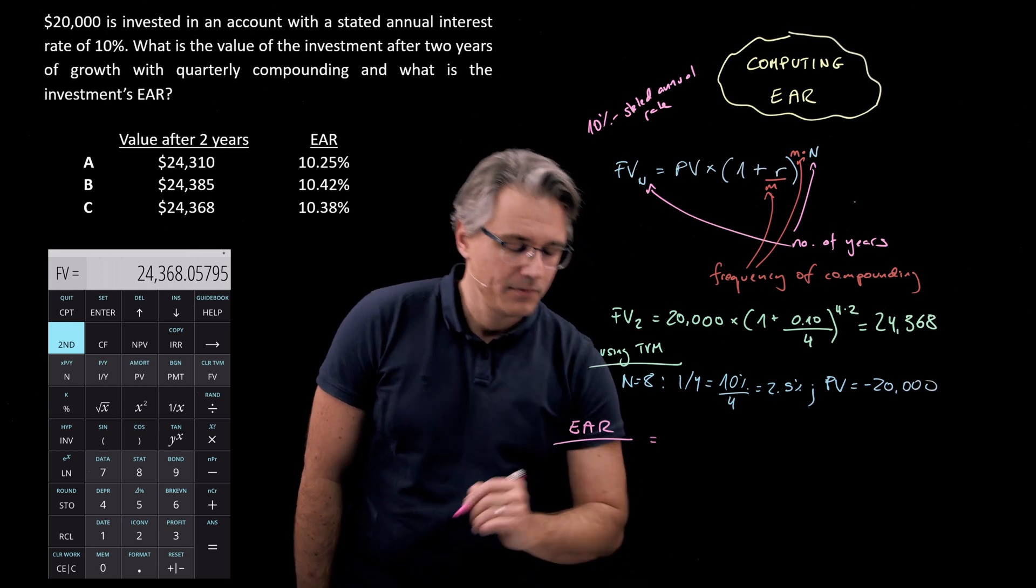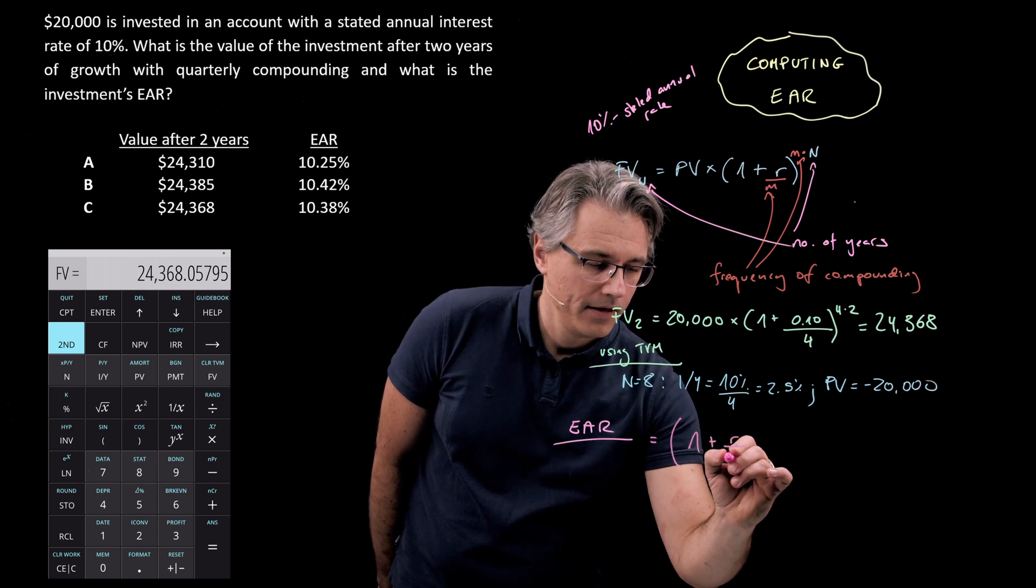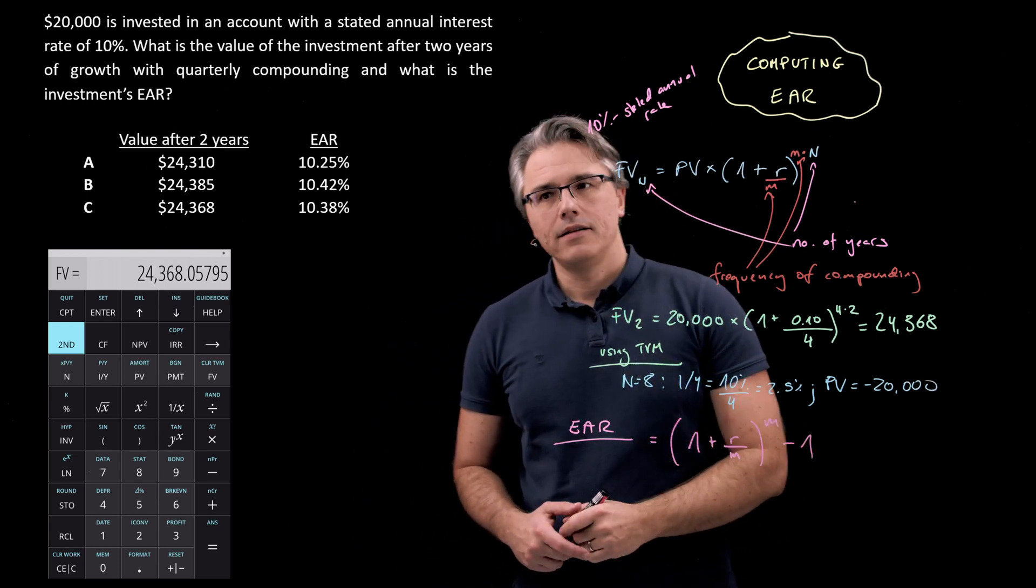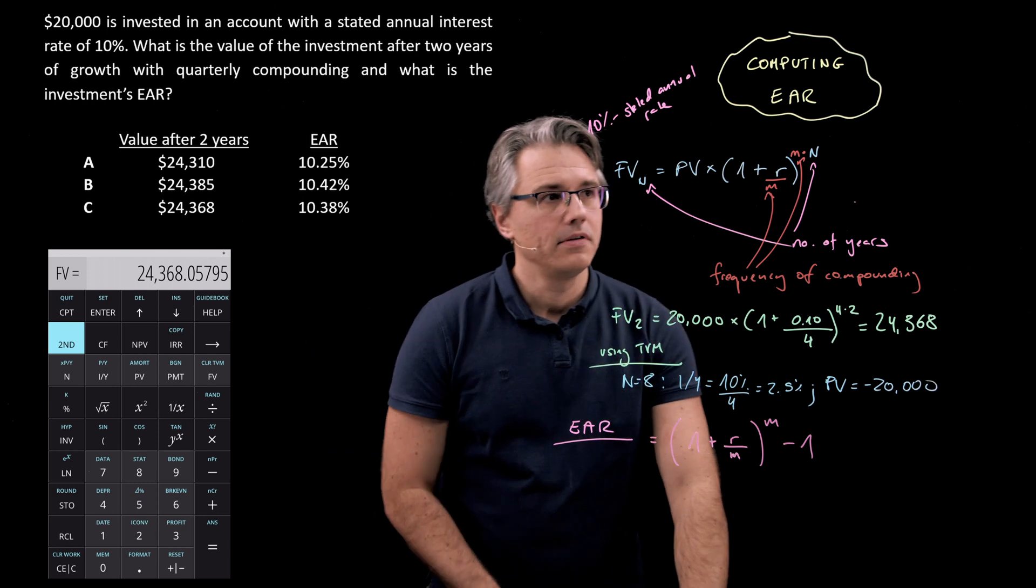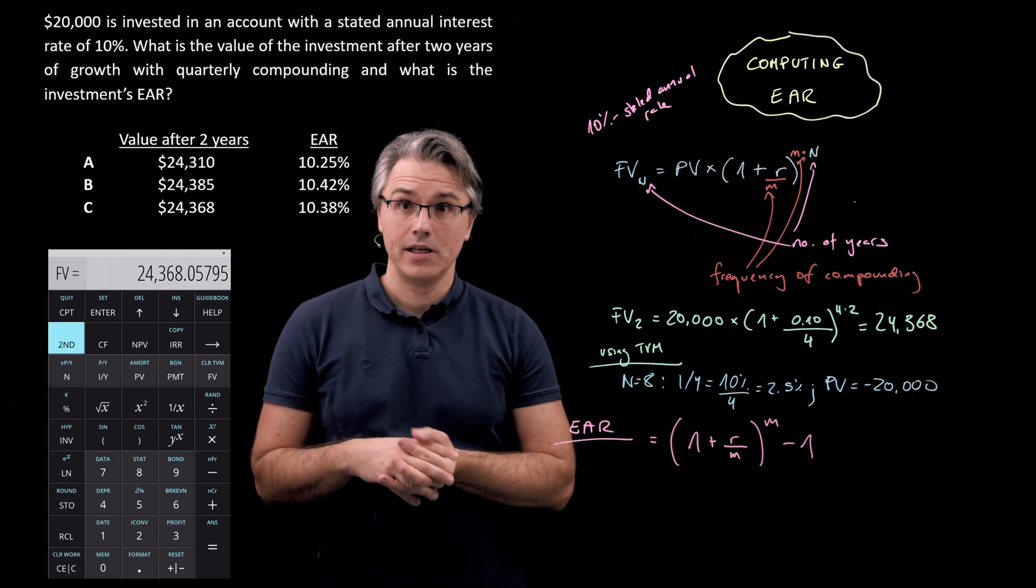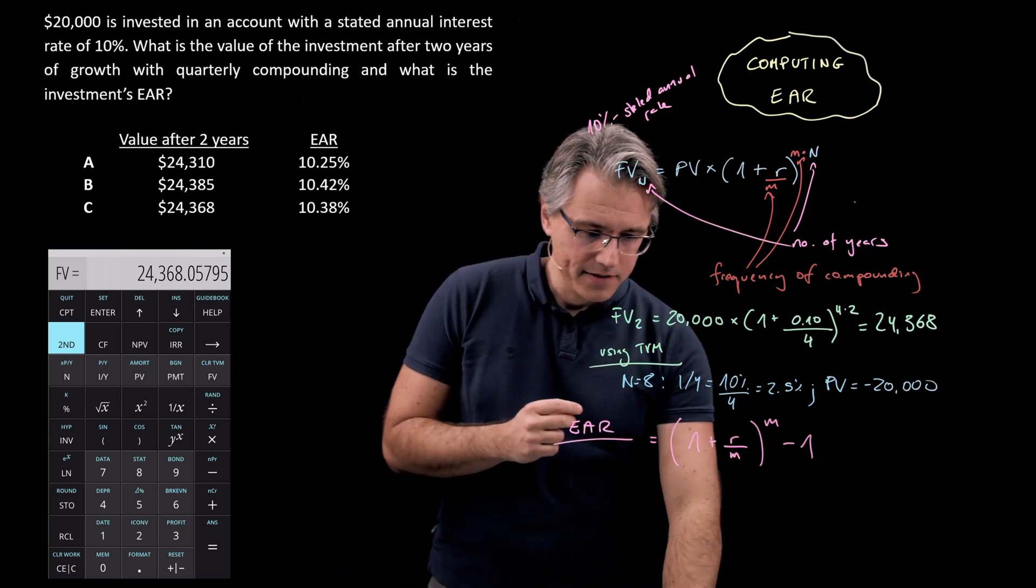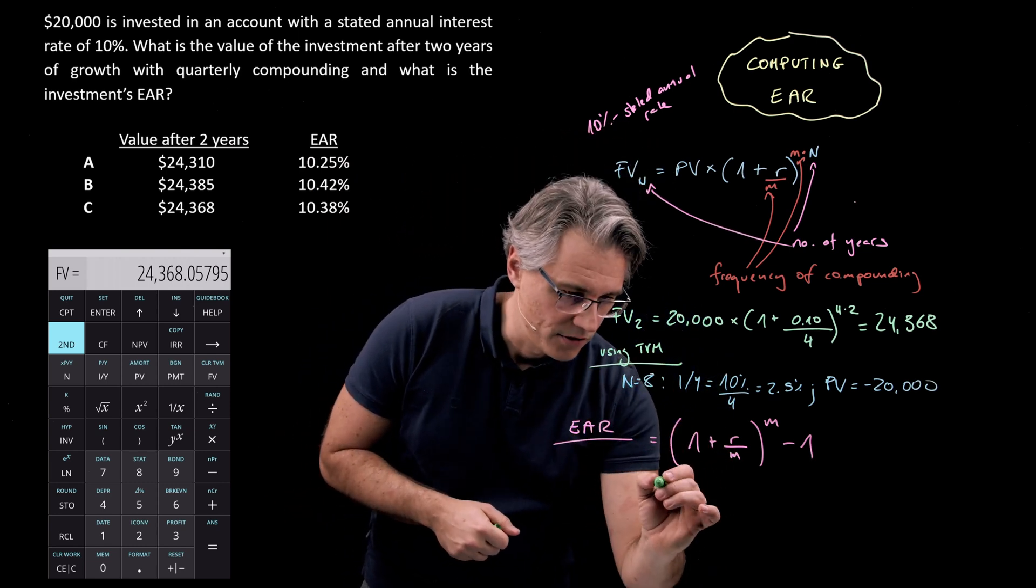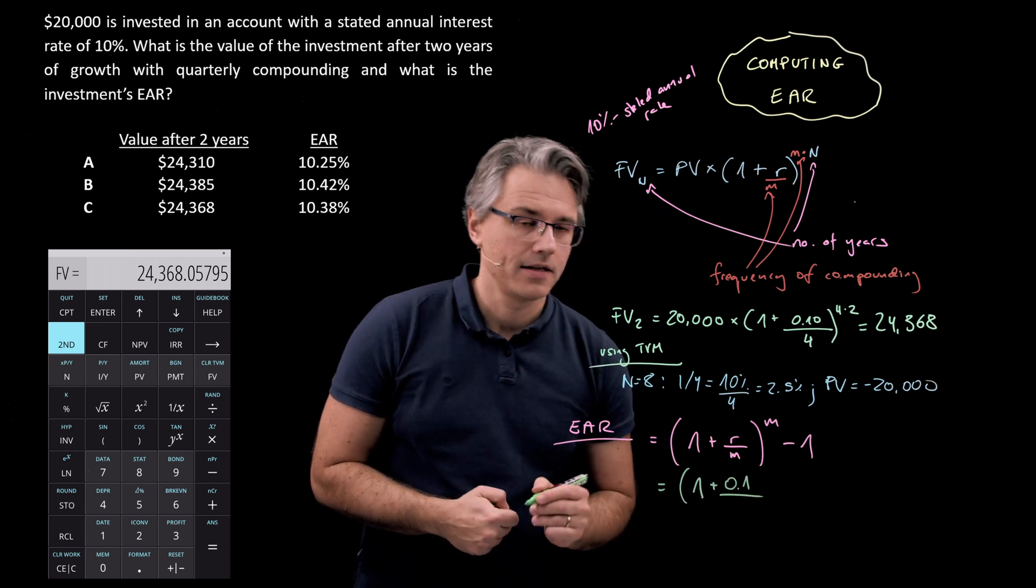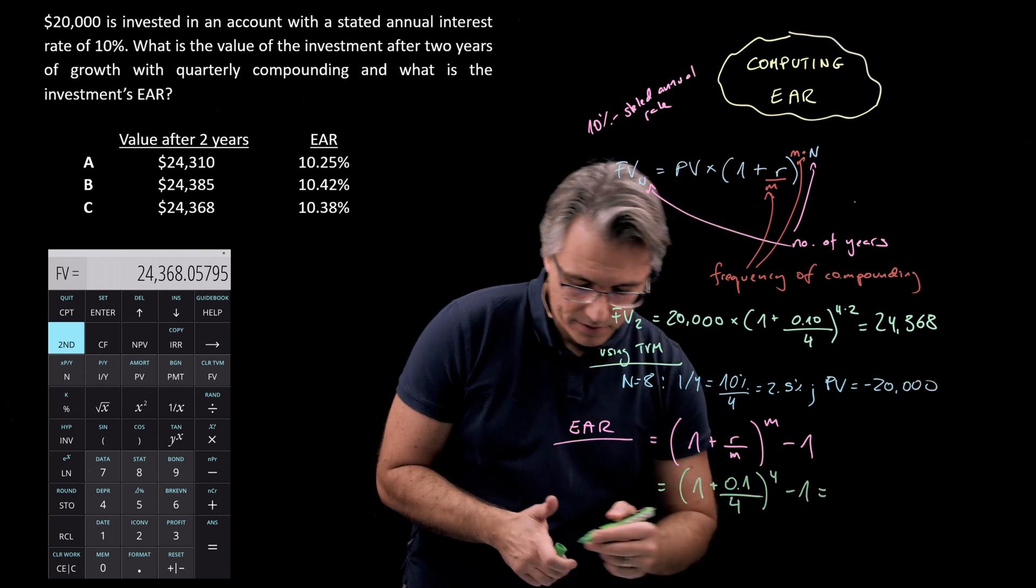Now how do we compute this effective annual rate? The easiest thing to do is simply to say that this is equal to 1 plus r divided by m to the power of m minus 1. This is simply taking the term over here but stripping it of the n parameter which is scaling up to a couple of years. So what we would get with the numbers from the question is 1 plus 0.1 divided by 4 to the power of 4 minus 1.